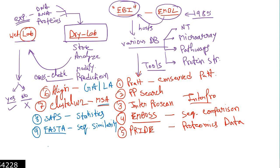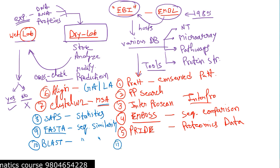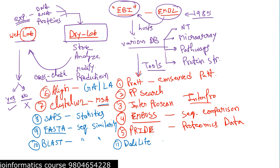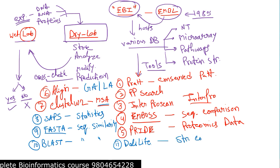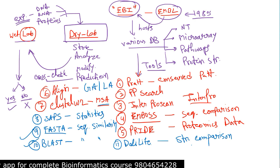FASTA is a sequence similarity searching tool. Then we have BLAST, also a sequence similarity searching tool. FASTA and BLAST do similar things with slight differences we'll talk about later. We also have DALI Light, number 11, which is used for pairwise structural comparison — so while FASTA and BLAST do sequence similarity search, DALI Light does structural comparison.